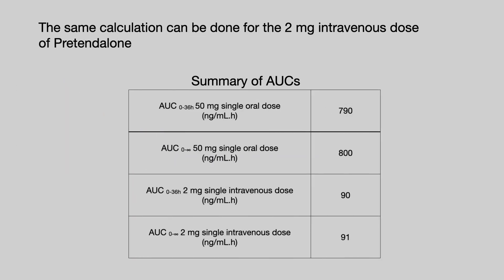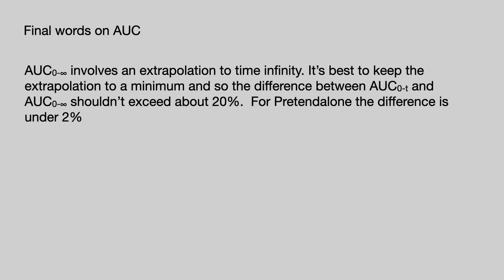All area under the curve values are summarised: AUC 0 to 36 and AUC 0 to infinity for both the oral dose and the intravenous dose. A final note: calculating AUC 0 to infinity involves an extrapolation, and it's best to keep that extrapolation to a minimum — the difference between AUC 0 to T and AUC 0 to infinity should not really exceed about 20%. For Pretendalone the difference is under 2%, so we are well within those parameters.